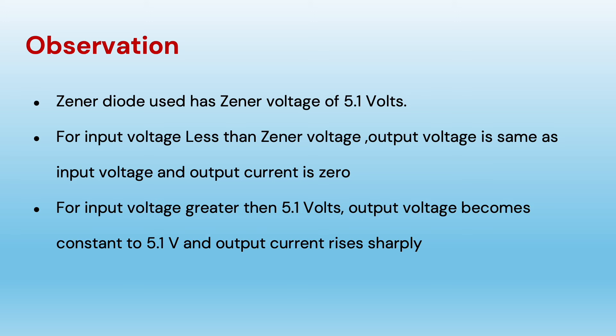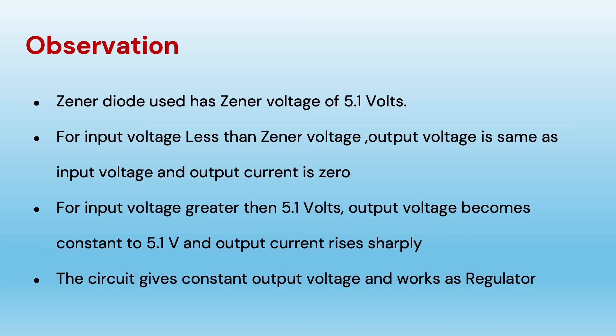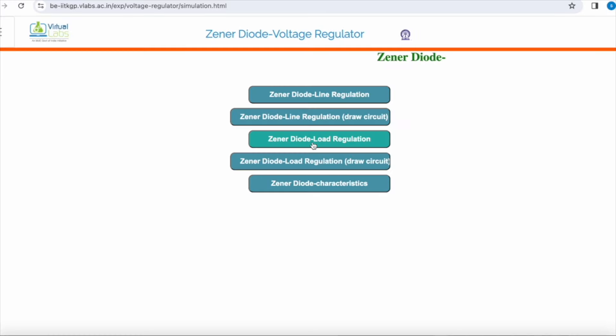As soon as the input voltage crosses 5.1 volts, the zener breaks down and output voltage becomes constant at 5.1 volts while output current rises sharply. This circuit gives constant output voltage and works as a regulator. Let us now do the same experiment on a virtual lab.